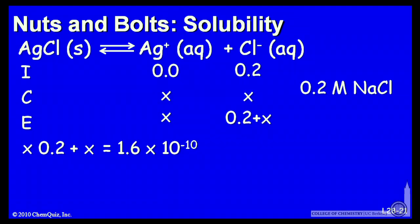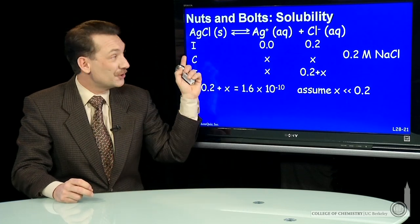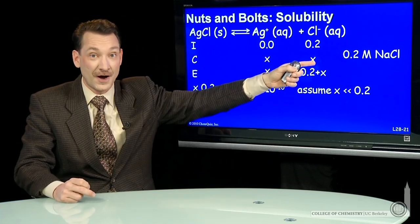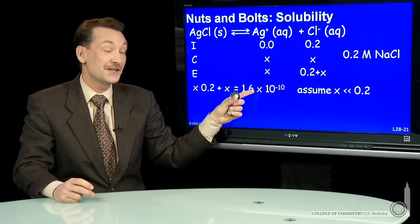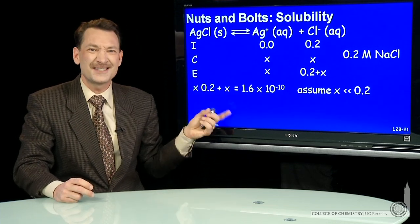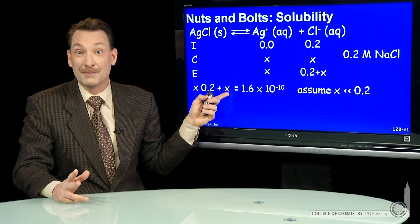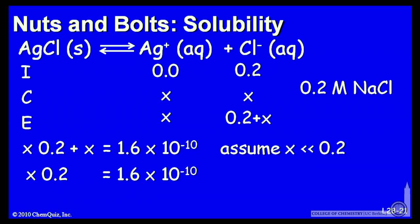So the product of these two in solution has to be 1.6 times 10 to the minus 10, the equilibrium constant. And I notice that x is going to be very small compared to 0.2. That's because this equilibrium constant is very small. So this 0.2 plus x is essentially 0.2. Let's approximate that as exactly 0.2. And then the math is relatively simple. We can solve for x is 8.0 times 10 to the minus 9.